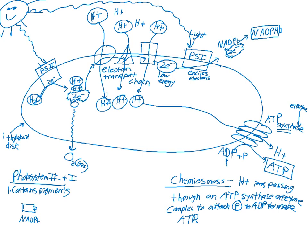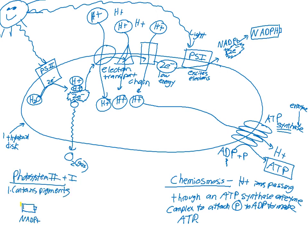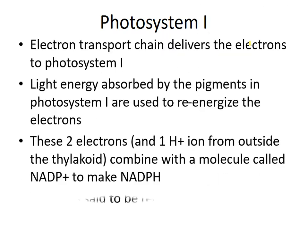And that is the light-dependent reaction of photosynthesis. Our goal was to take sunlight, do all these chemical transformations, and make two forms of energy: ATP and NADPH. We took light energy and converted it into two forms of chemical energy — that's the big picture. Here are some of the captions.